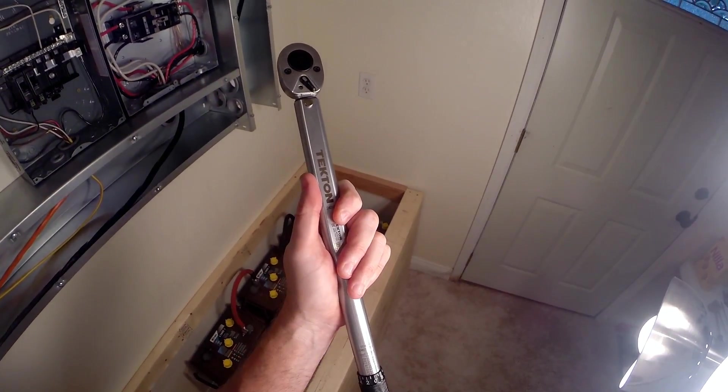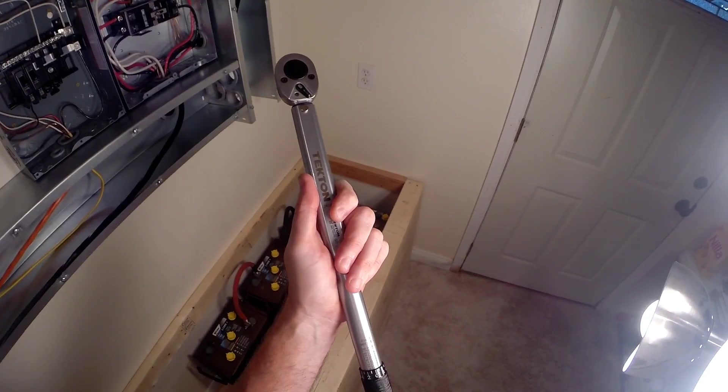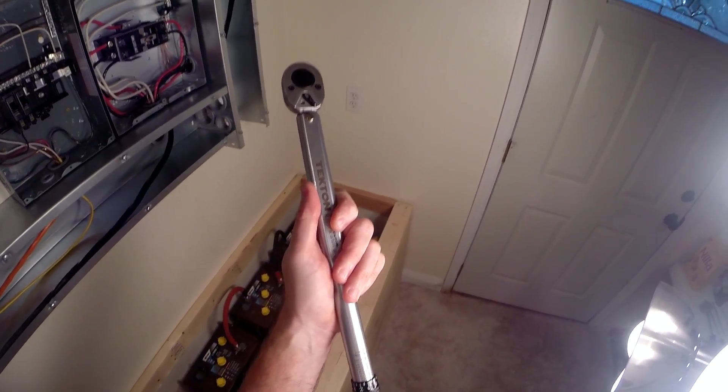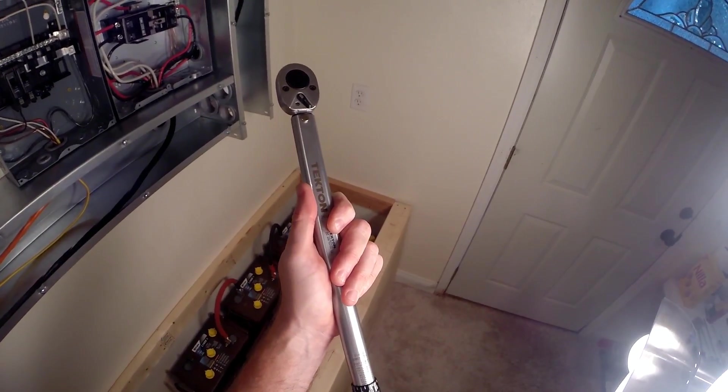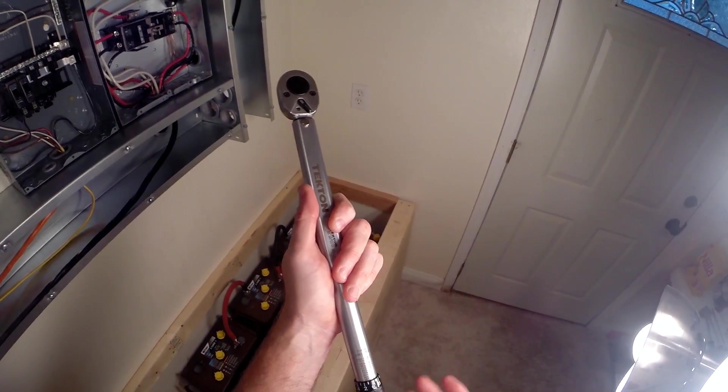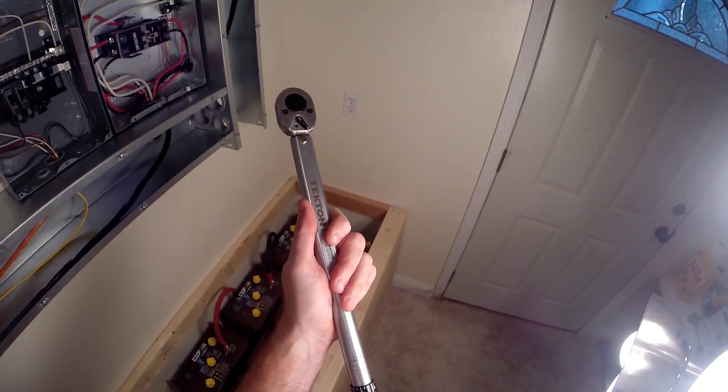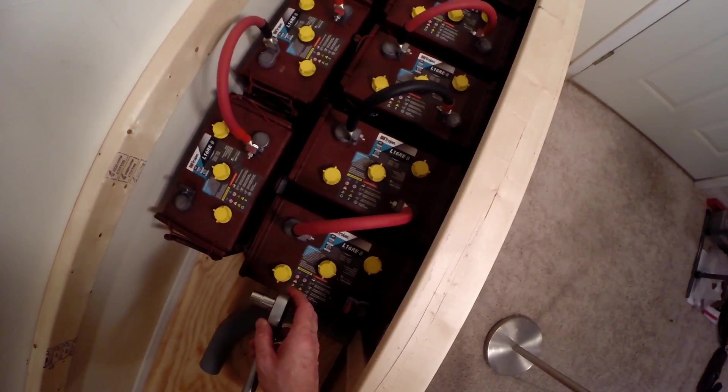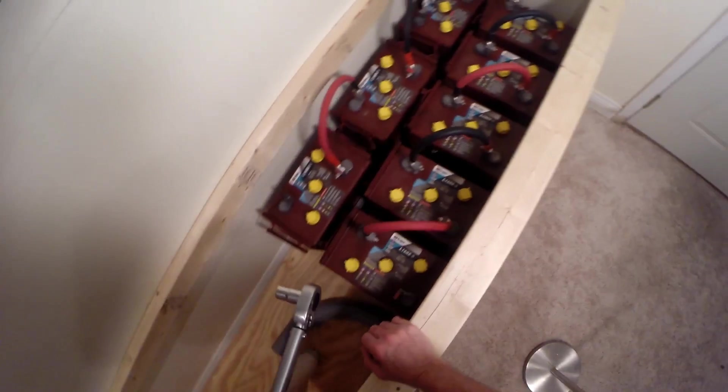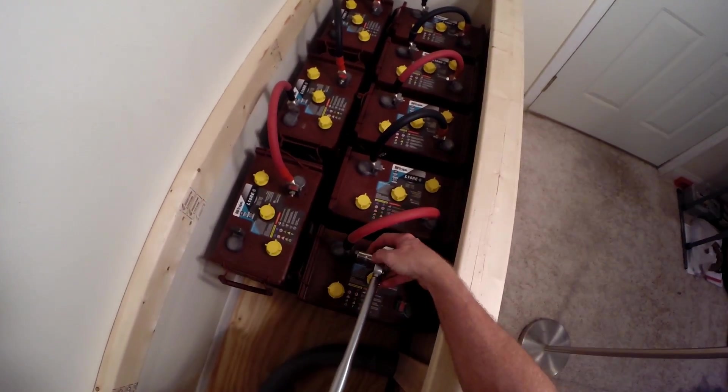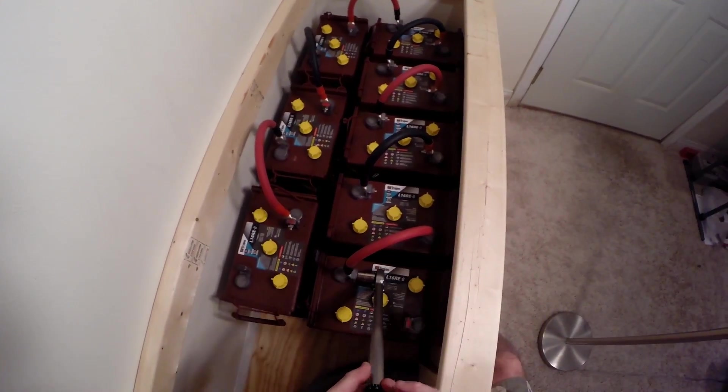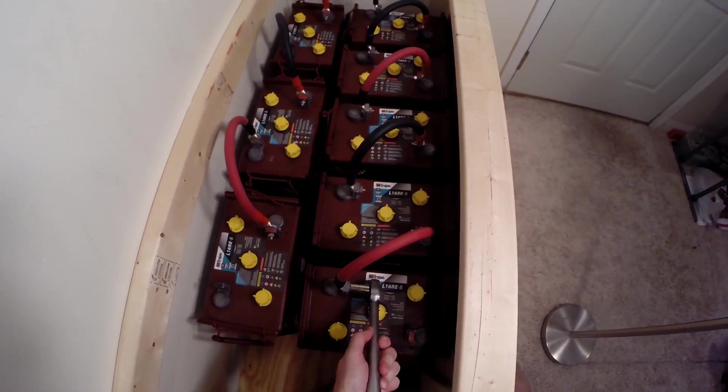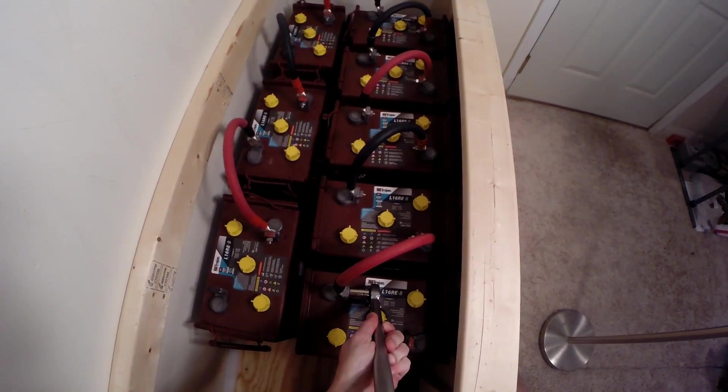I looked up on the Trojan website - they say to torque these battery terminals to 100 to 120 inch pounds, which converts to between 8.3 to 10 foot pounds. Don't drop the wrench in here. I'll see where this thing clicks off - there we go, that's nine and a half foot pounds.